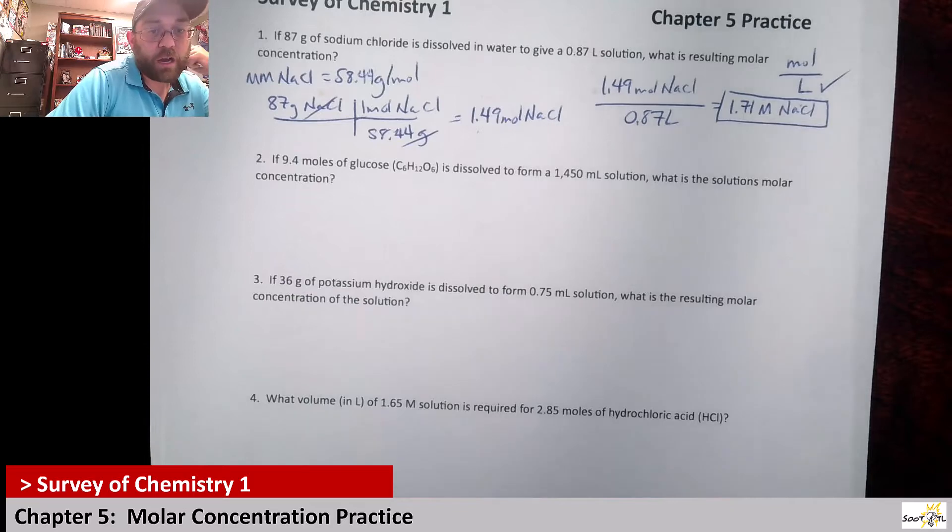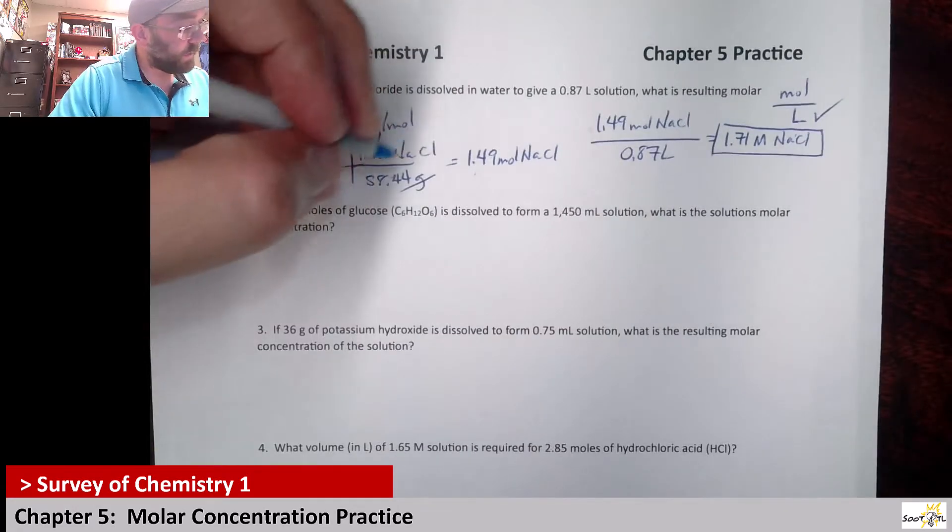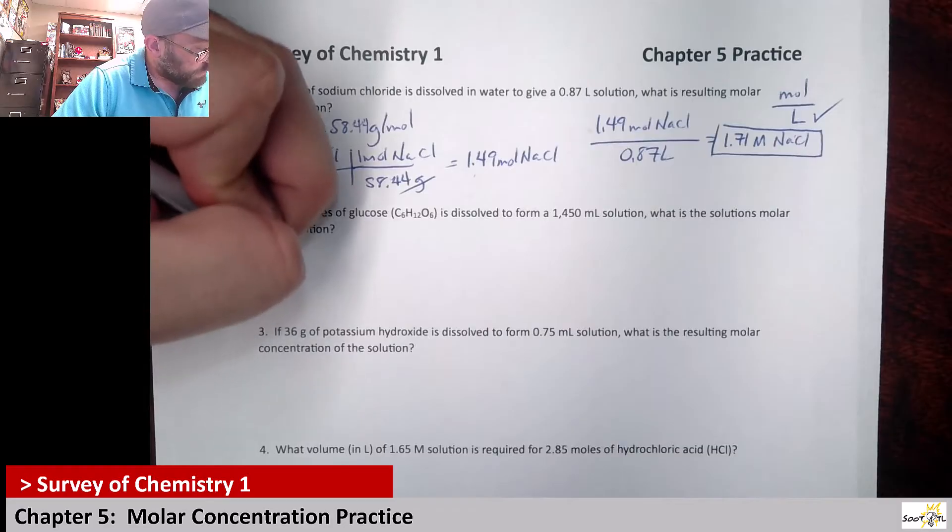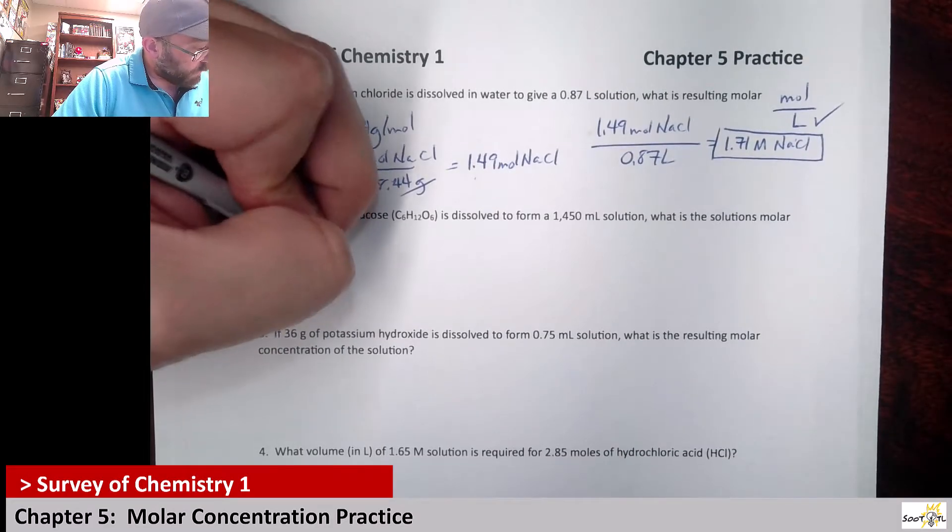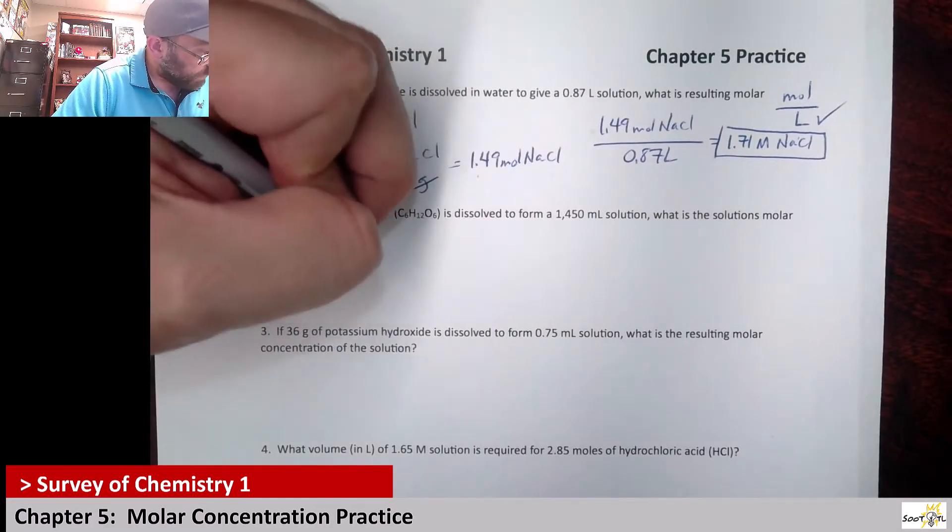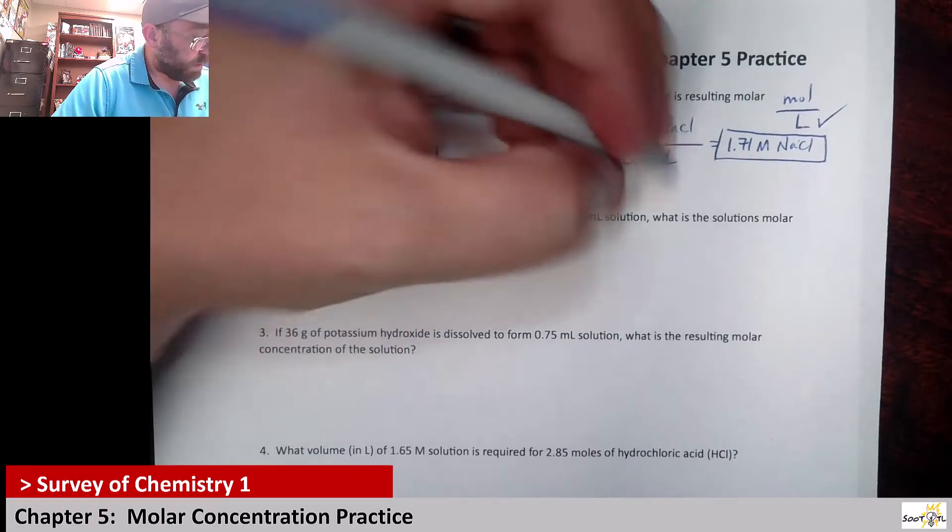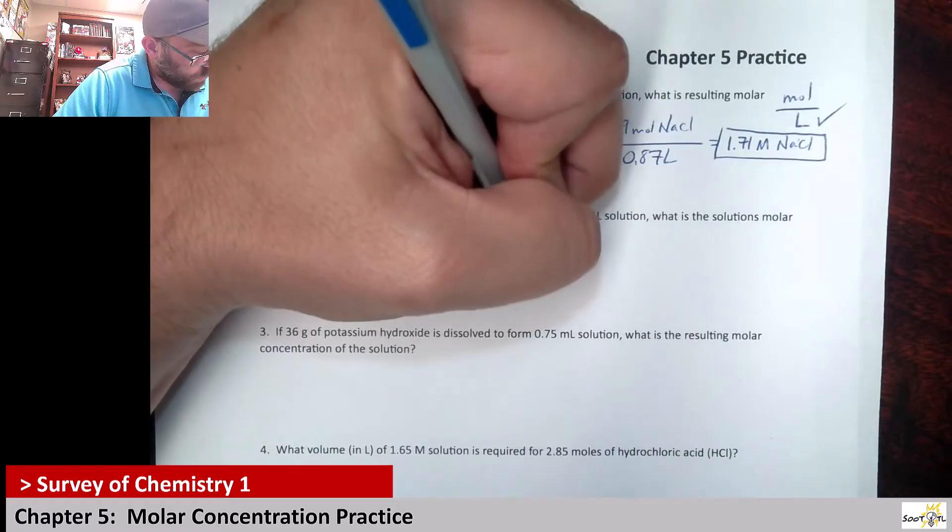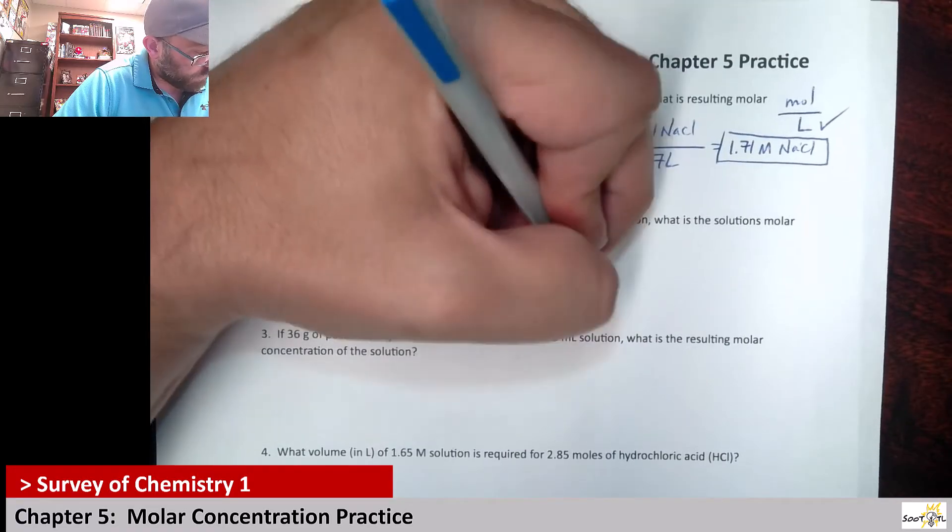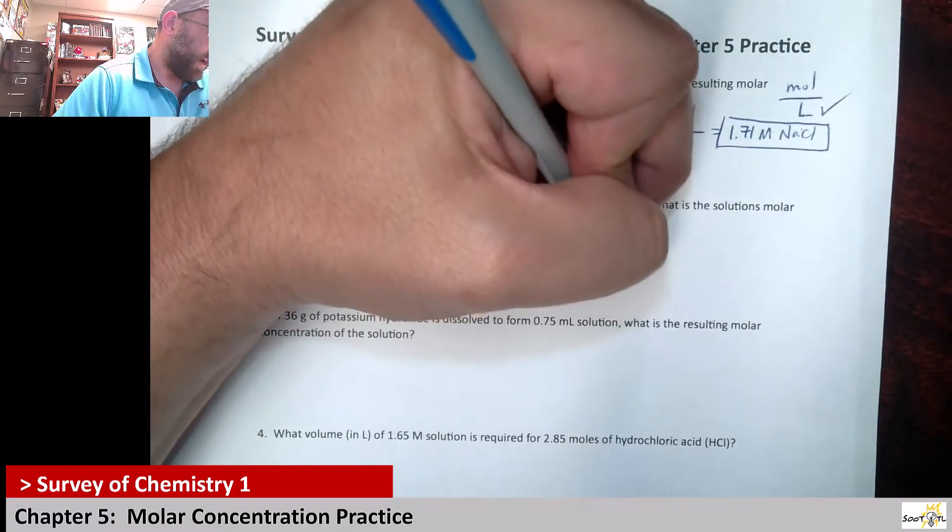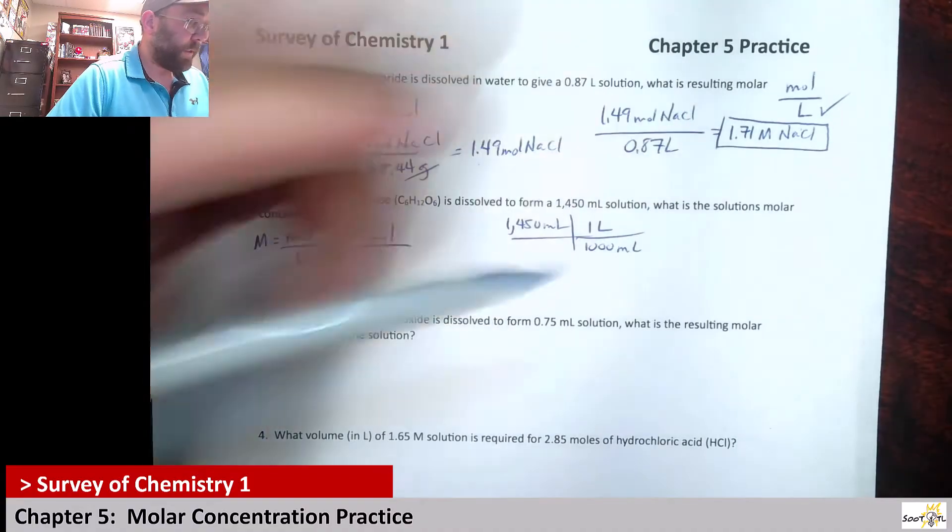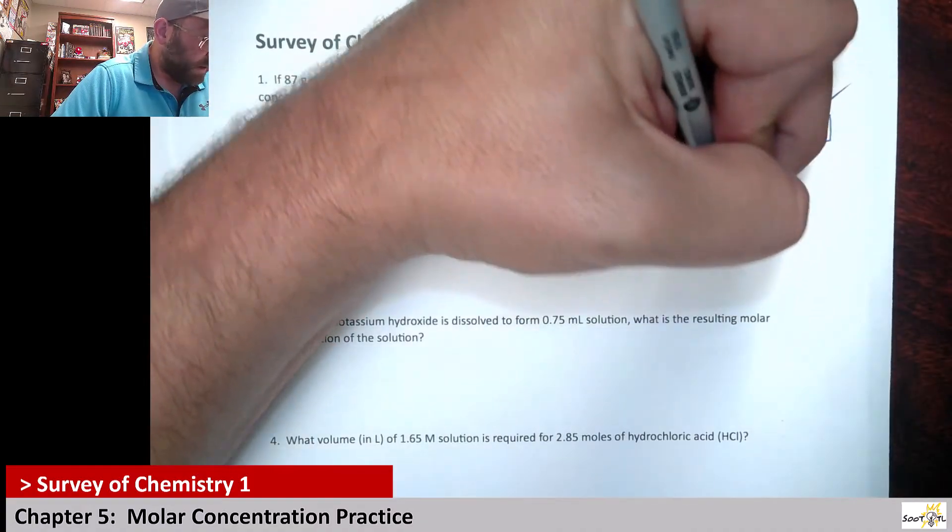Next up it says if you have 9.4 moles of glucose dissolved to form a 1,450 milliliter solution, what's the solution's molar concentration? Remember molar concentration is moles over liters. We have 9.4 moles of glucose. But we don't have a liter amount, we have a milliliter amount. So we know that 1,450 milliliters, if we convert it, there's a thousand milliliters in one liter. So that really just means we have 1.45 liters.